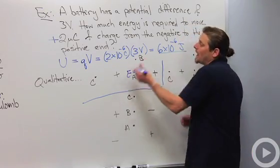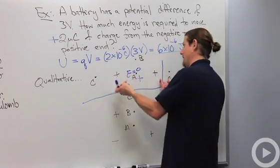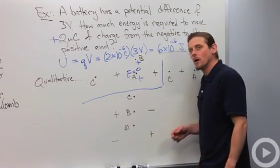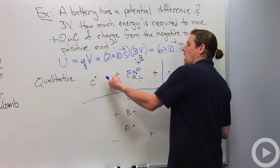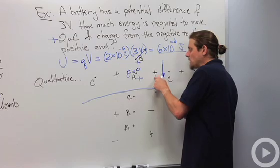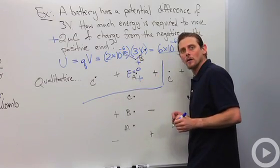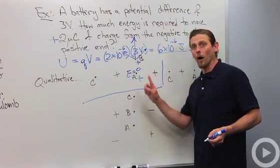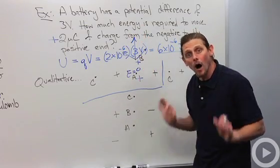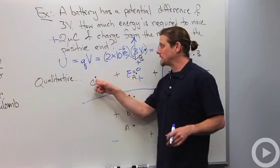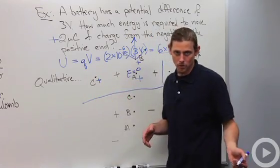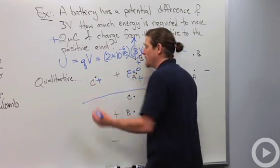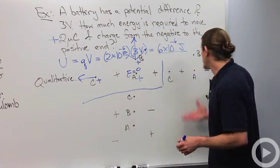At point B, again the only contributions are from positive charges, so the electric potential is positive. For the electric field, each positive charge pushes outward — adding those two vectors together, the electric field points straight up. At point C, the electric potential is again positive. Both positive charges are pushing to the left, so the electric field points to the left.